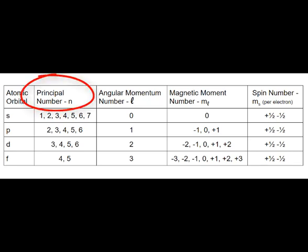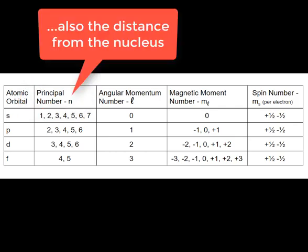The principal quantum number is associated with the energy of the electron. The higher the principal quantum number, the greater the kinetic energy of the electron. And the principal quantum number is directly related to the periods in the periodic table.